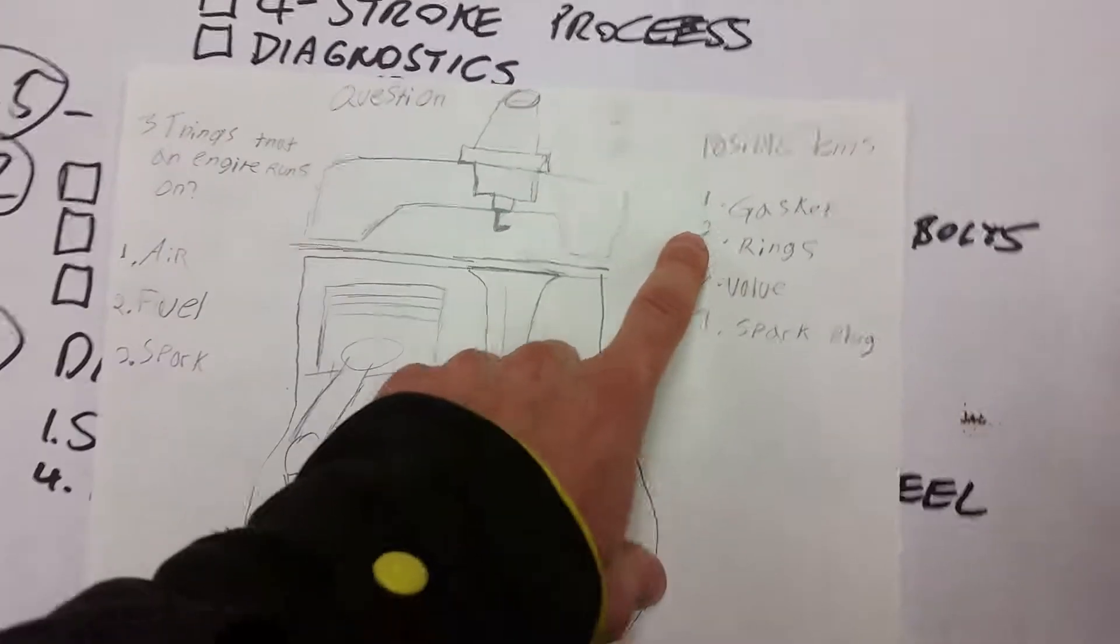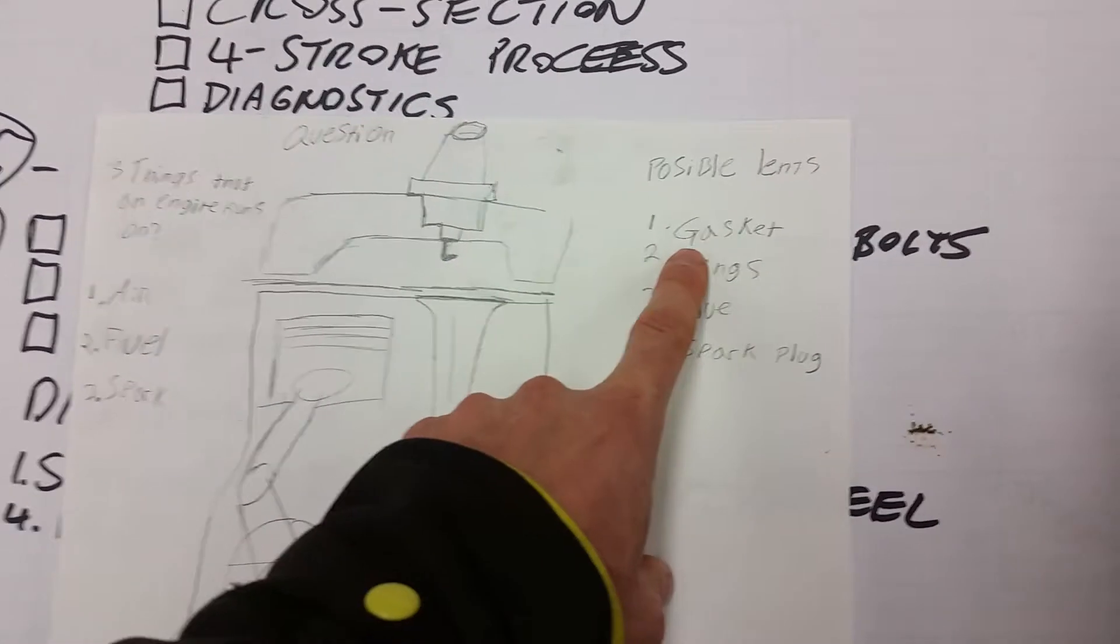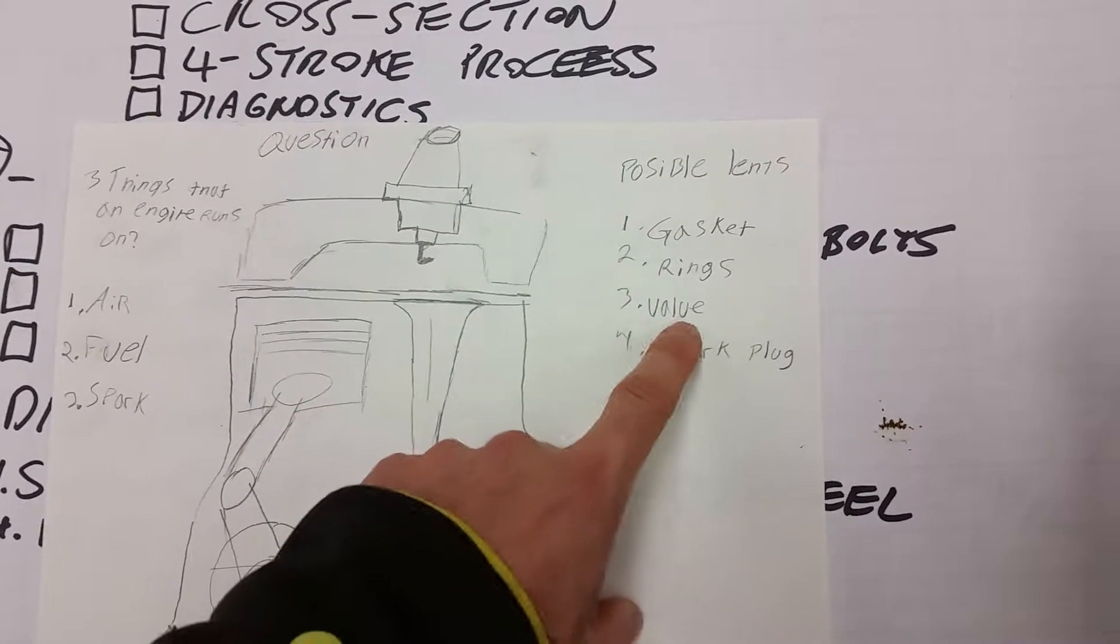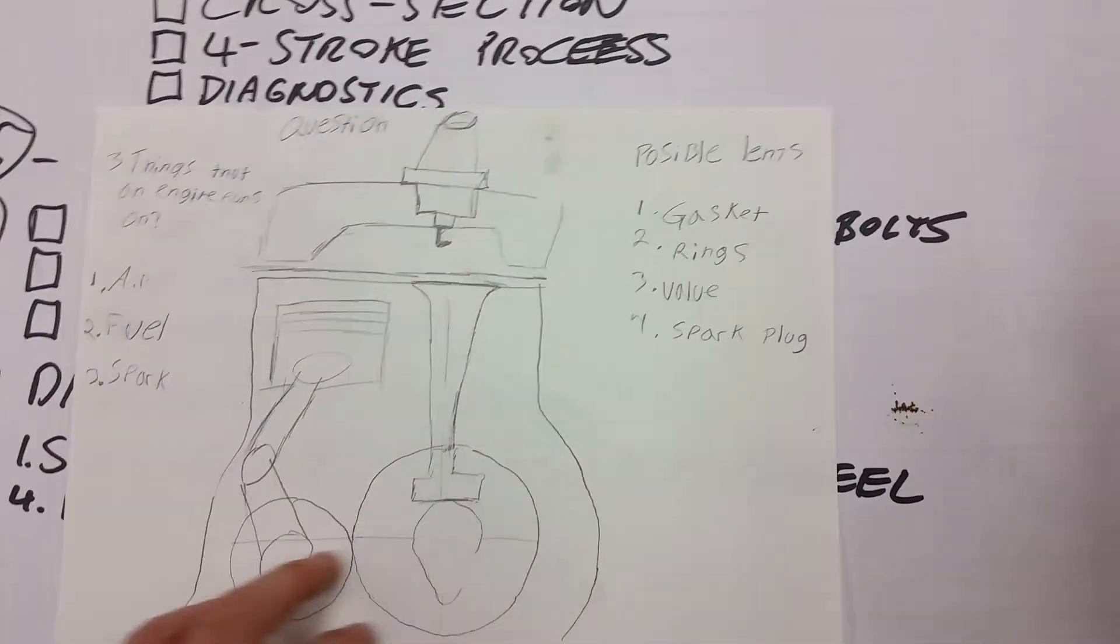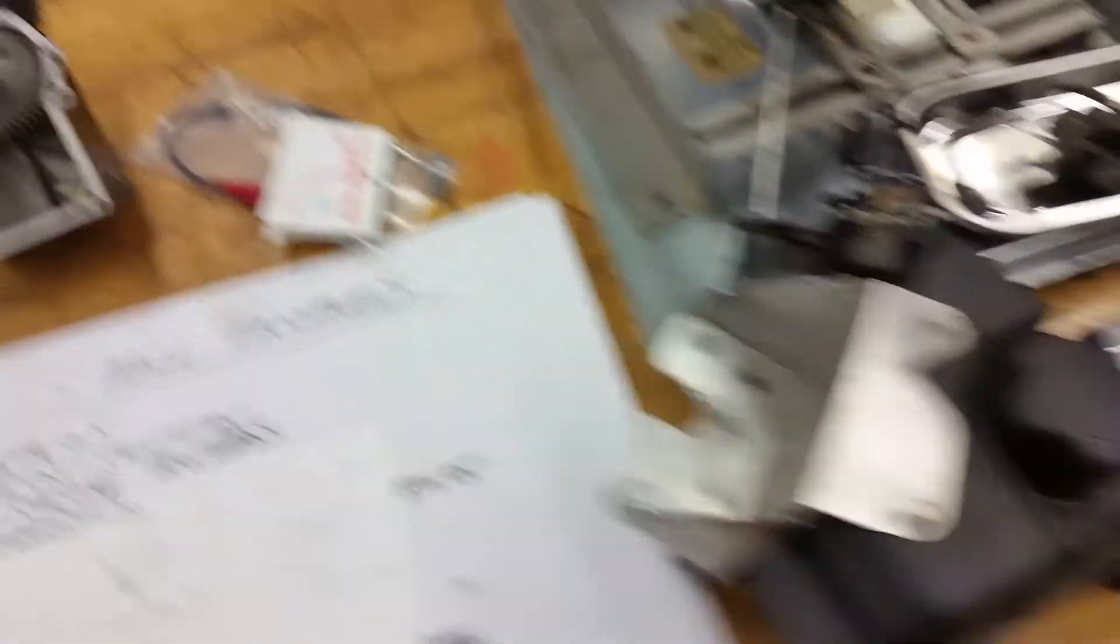And if you have all those and it still doesn't work, then you have a possible leak of compression. It can leak from the gasket, it can leak from the rings, it can leak from the valve, and it can leak from the spark plug threads. So those are the possibilities.